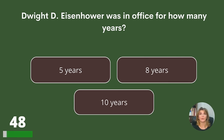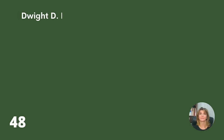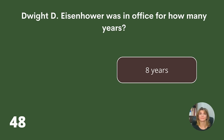Dwight Eisenhower was in office for how many years? Five, eight, or ten? Answer: Eight years.